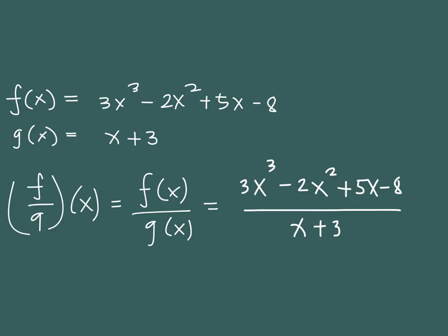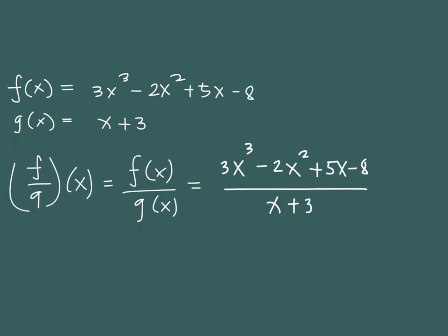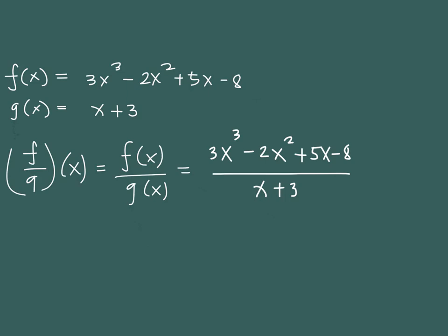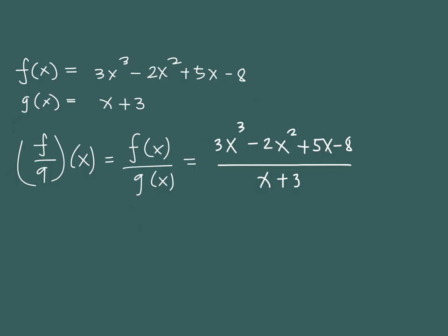We need to consider whether we can simplify the resulting expression. It seems like we could divide 3x cubed minus 2x squared plus 5x minus 8 by x plus 3. If the question is only asking you to show the quotient f over g, the problem is already done. But if they ask you to simplify it, one way is by dividing the numerator by the denominator using long division first, and then I'll show you how to simplify using synthetic division.